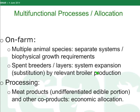Turning to multifunctional processes and allocation: the poultry sector is relatively simple, certainly compared to the small ruminants, with regard to multifunctional processes. Primarily, if in small systems there may be multiple animal species, we recommend a system separation, perhaps based on biophysical growth requirements. With regard to the background breeding or layer systems, for spent breeders or layers we recommend a system expansion approach by substituting a relevant broiler. We can have some discussion about the decision to recommend substitution by a broiler during the Q&A. At processing, we do not differentiate between different cuts of meat — all of the edible portion is allocated against all of the other co-products by an economic allocation, and we can discuss the rationale for that decision in the Q&A as well.